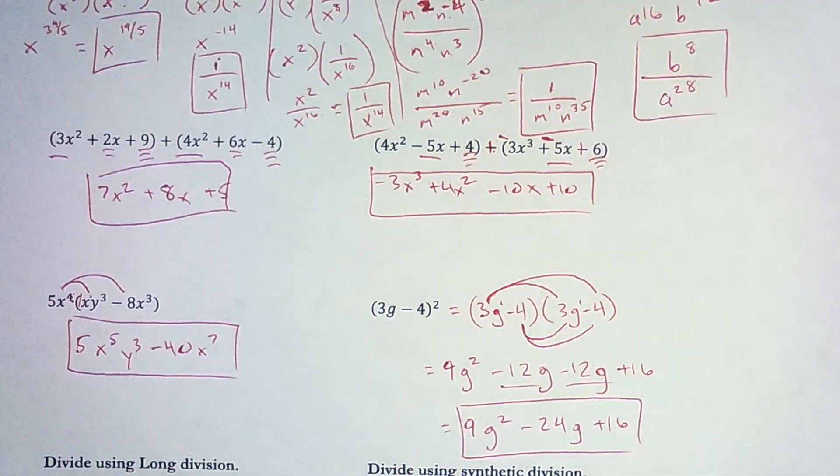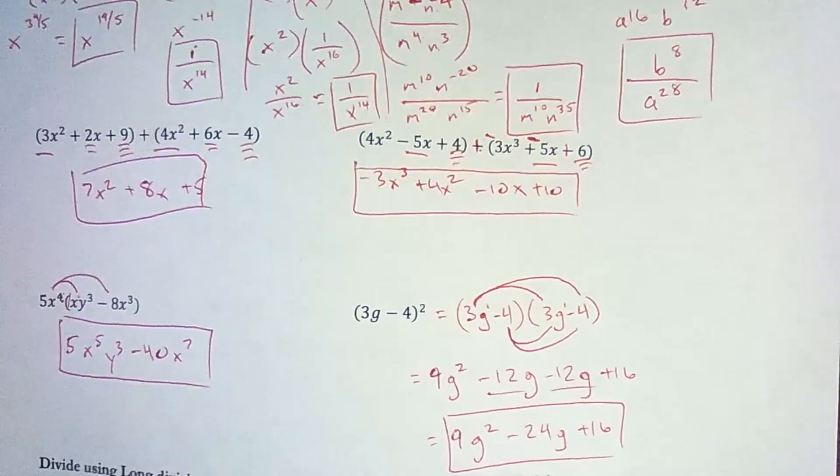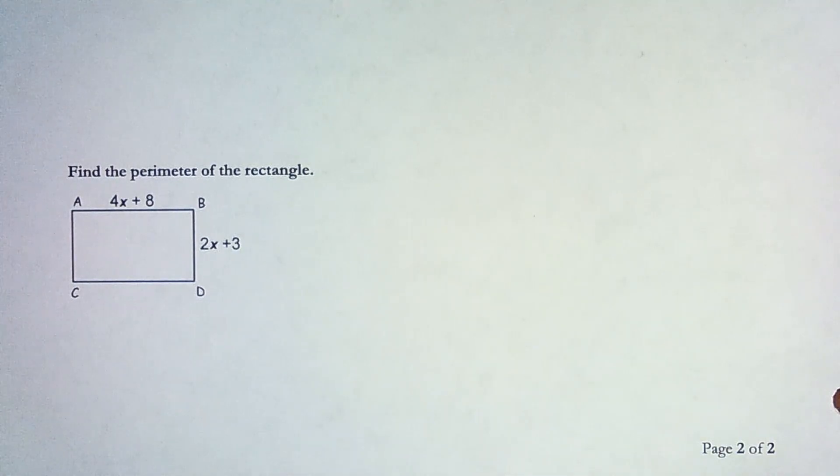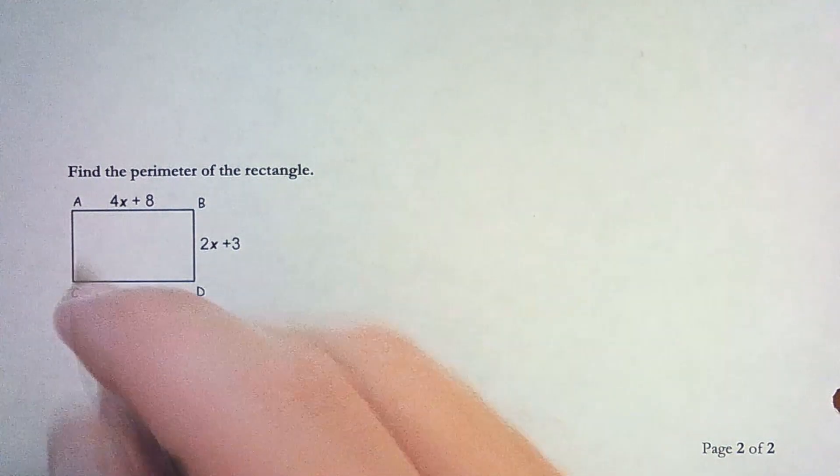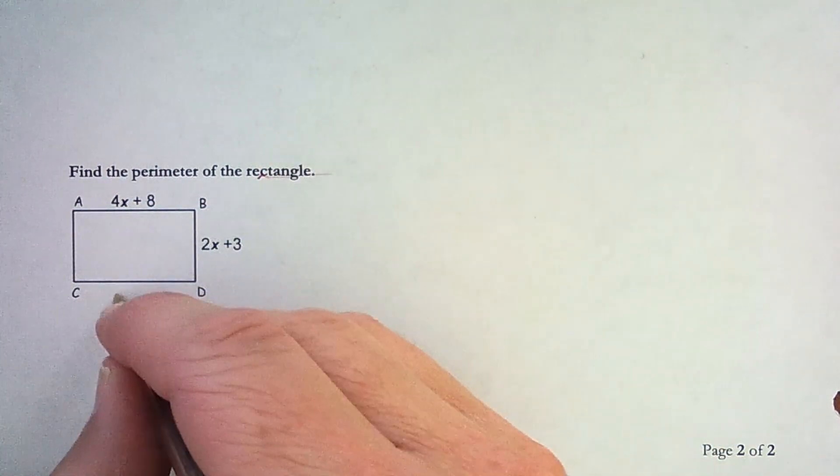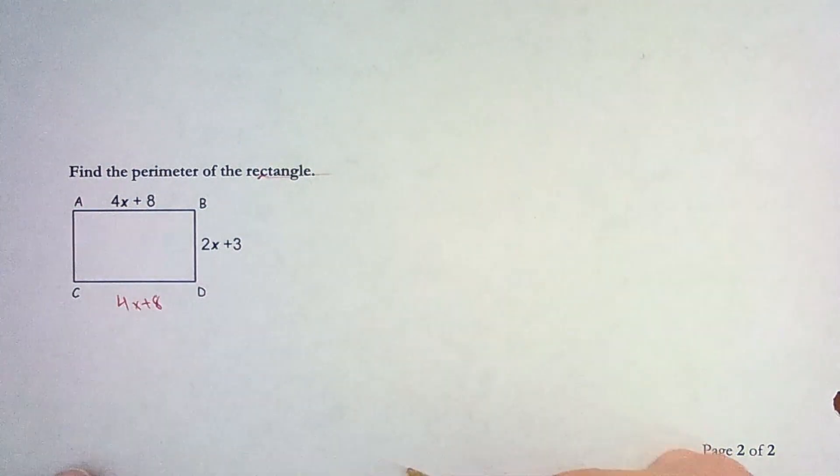And I've got one more problem I want to include in this section. And that is finding the perimeter of this rectangle. And that's just adding some like terms. So I've got 4x plus 8 here. And because it's a rectangle.